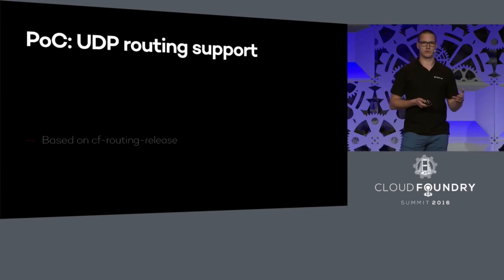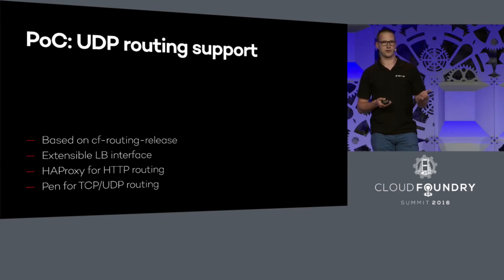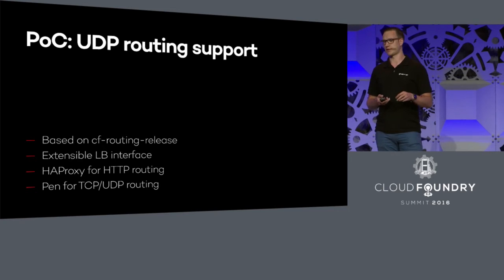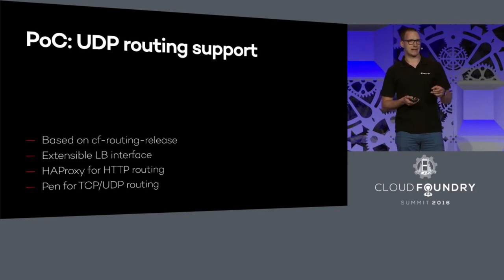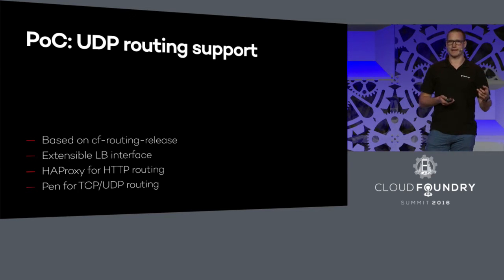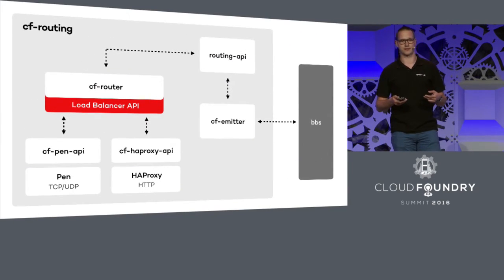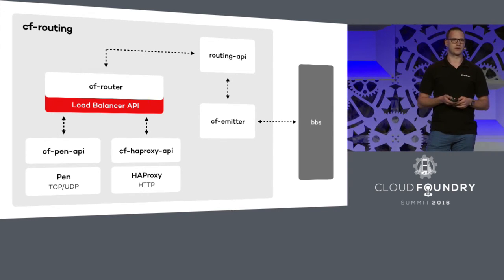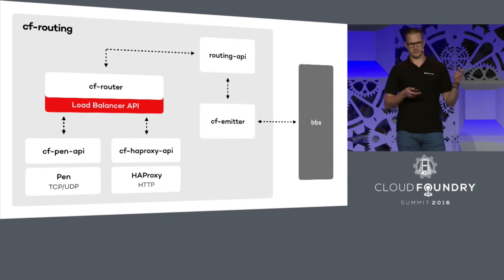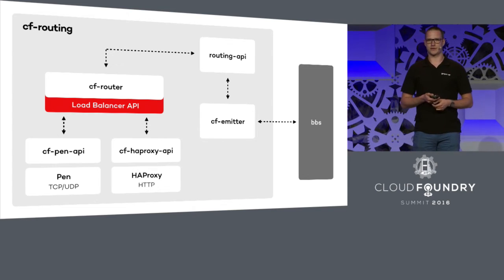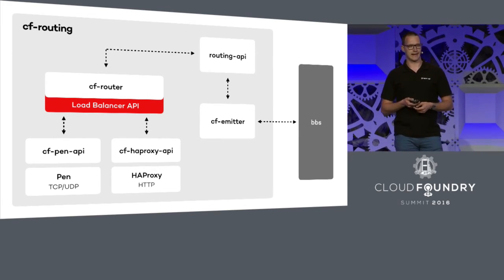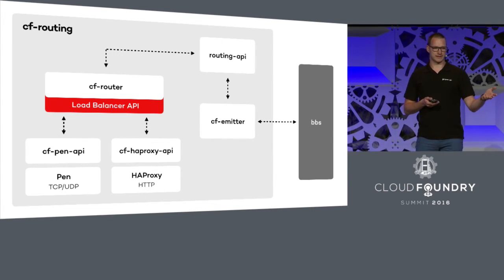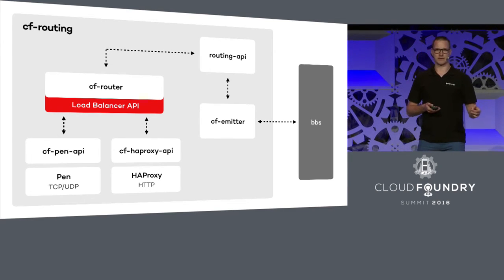So we decided to go ahead and prepare a POC. We tried to add UDP support to Cloud Foundry using the existing TCP routing component. Basically what we did was create an extensible load balancer interface and used two different types of proxies for handling different types of traffic. We used a proxy already existing within Cloud Foundry to handle HTTP traffic, but we added an additional component — we used PEN proxy to handle TCP and UDP routing. Alongside that, we had to modify some other components; for instance, we created CF Router in place of TCP Router and CF Emitter in place of TCP Emitter.